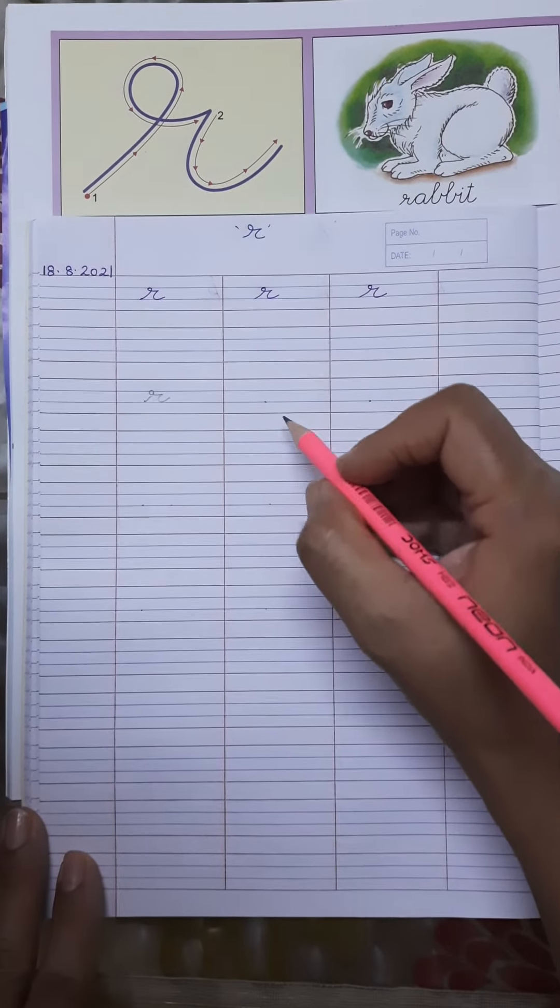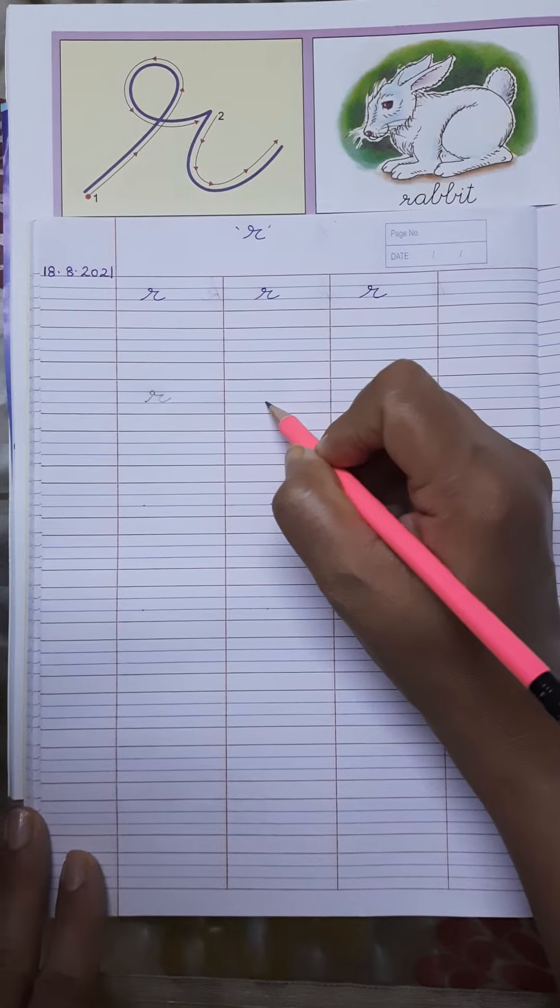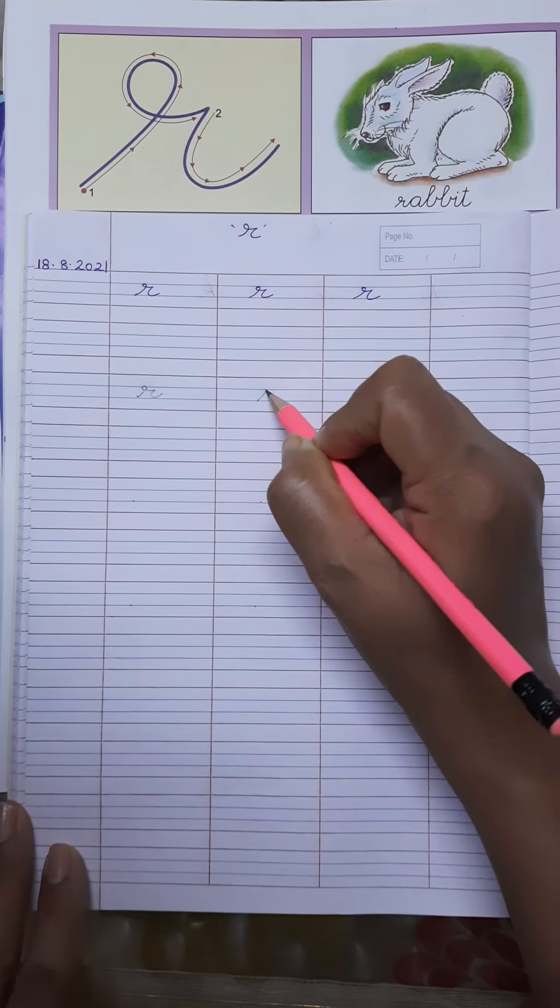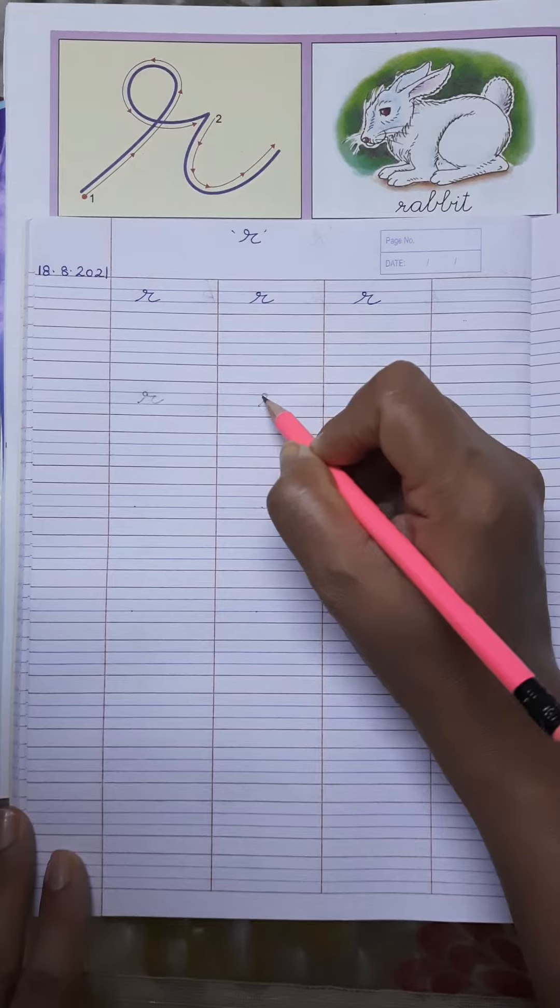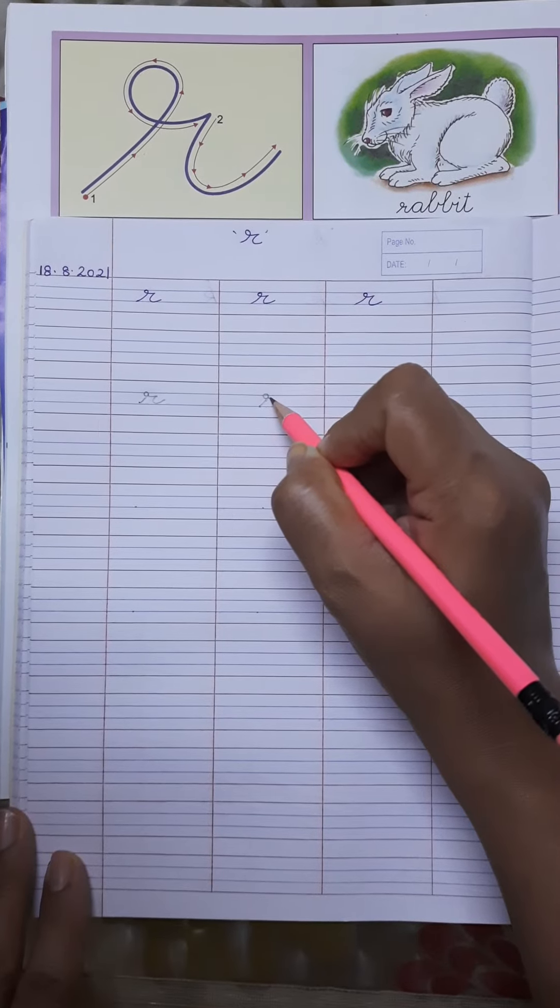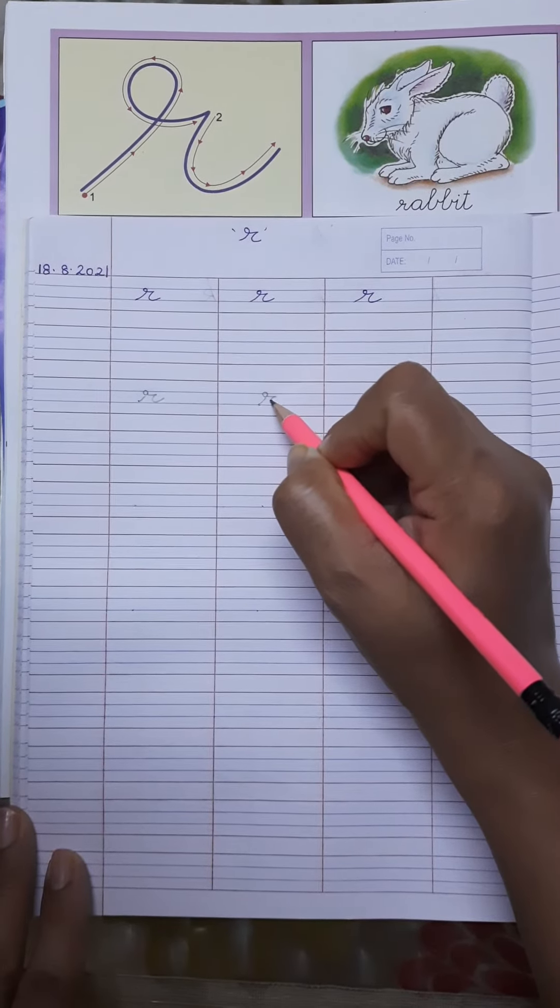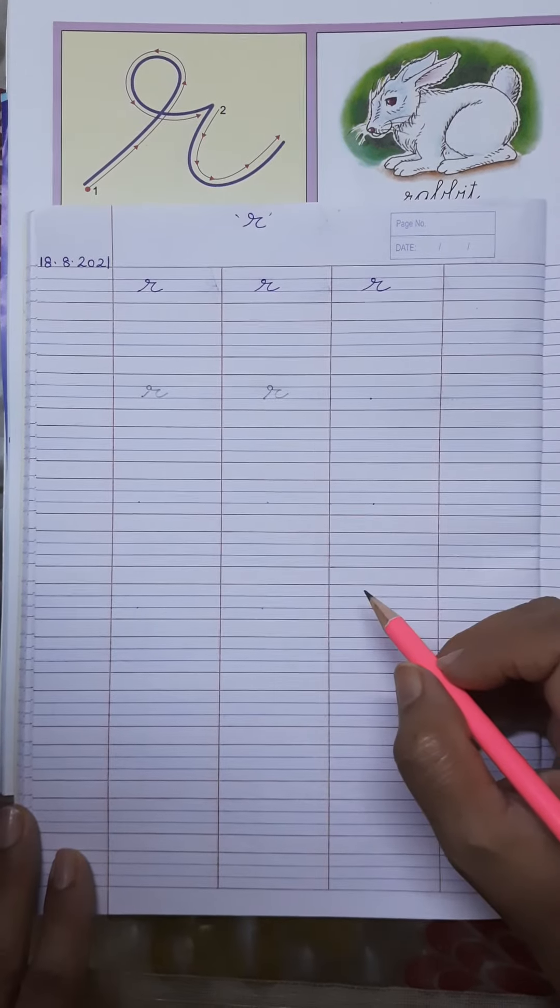Let's write it once again. From the bottom blue line to the upper blue line. Make a small circle. Come out. Make a sleeping line and make a curve like this. R.